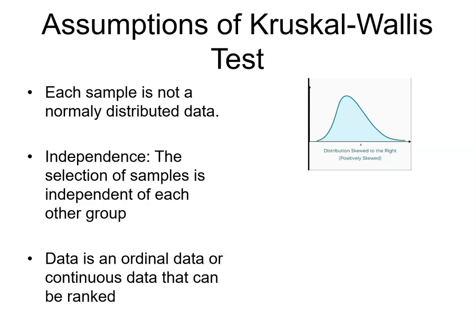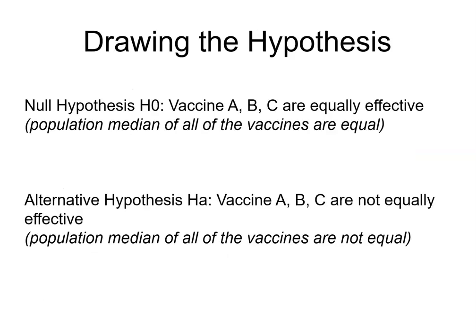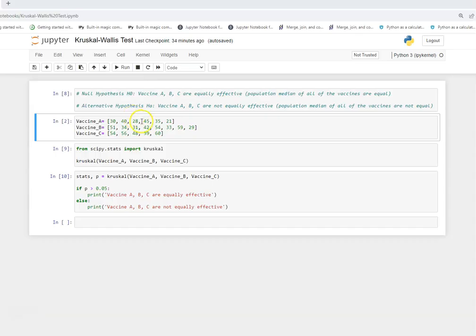For calculating the chi-square statistic, we now move on to creating the hypothesis. Our null hypothesis is that vaccines A, B, and C are equally effective — in other words, the population medians of all the vaccines are equal. The alternative hypothesis is that vaccines A, B, and C are not equally effective — that is, the population medians of all the vaccines are not equal. In simple terms, we are testing whether the distributions of vaccines A, B, and C are the same or not.